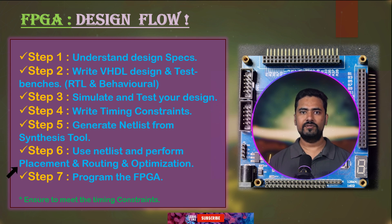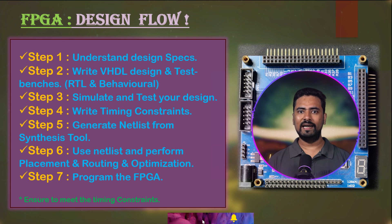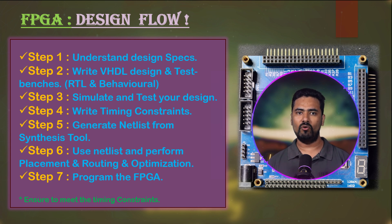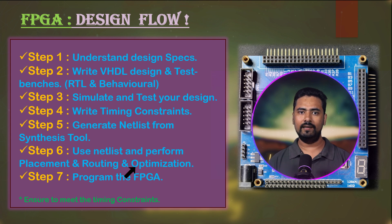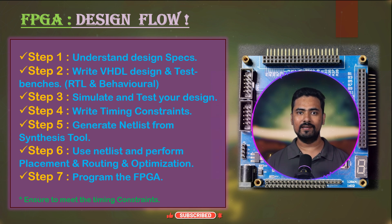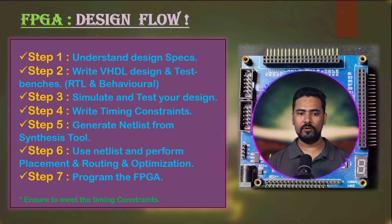Placement is where the system figures out where each component of your netlist will be physically located on the FPGA chip. Routing determines how these components will be interconnected using the FPGA's internal wires. And finally, optimization ensures the design is as efficient as possible. The end result of implementation is a binary file — a special set of instructions that the FPGA can understand to configure itself according to your design.